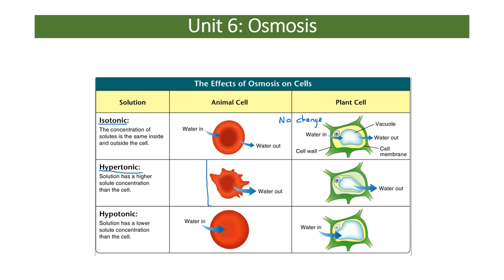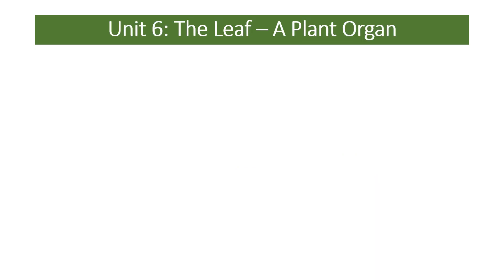Hypertonic is when there is a higher solute concentration outside the cell than inside — for example, a very high sugar solution. Water would move out of the cell, reducing its mass. In animal cells, they would crumple up; in plant cells, the outer shape is maintained because the cell wall is strong, but the inner membrane pulls away. In a hypotonic solution — for example, putting a blood cell in pure water — water rushes in and eventually the cell will burst. In a plant cell, the cell becomes turgid and the cell wall maintains its shape and stops it bursting.